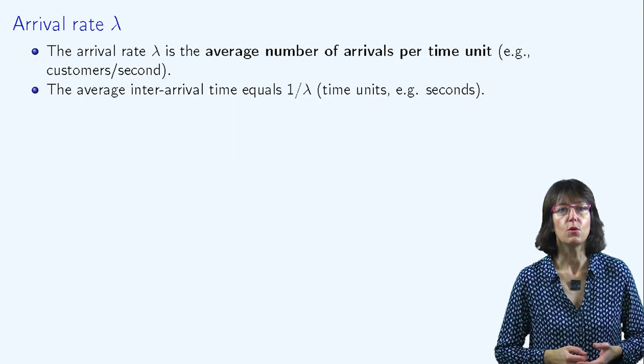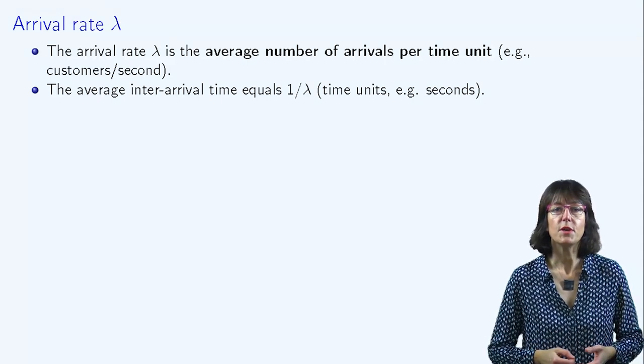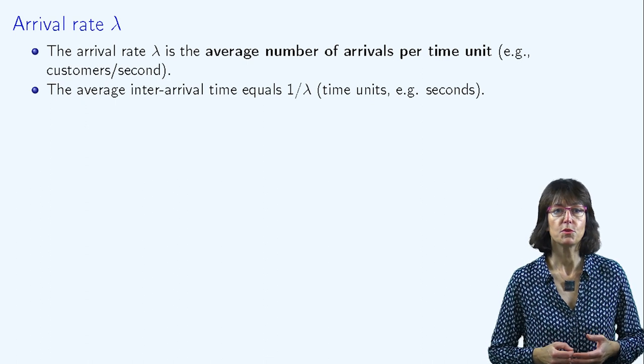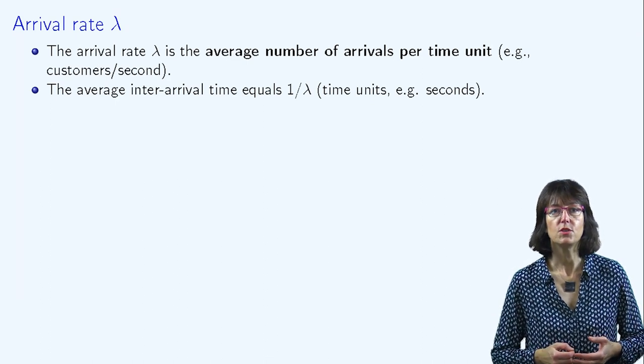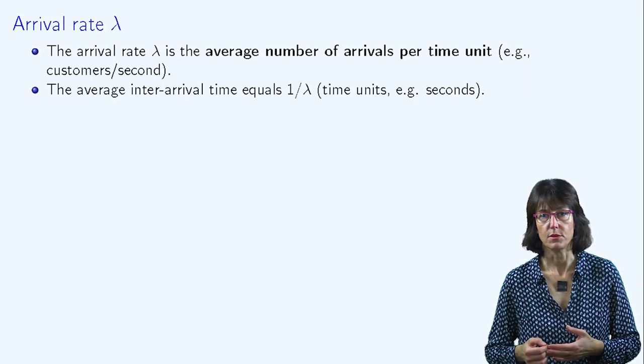Lambda is called the arrival rate. It represents an average number of customer arrivals per time unit. So, its unit is the inverse of the time unit. For example, customers per second.